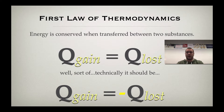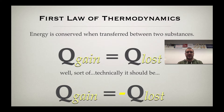So first, and this is one of the big laws of thermodynamics here, the first law, which is going to state that the thermal energy must be conserved as it goes from one material to another. So if you look at the equation that's up here, we have Q gained equals Q lost. So that means the thermal energy gained by one material has to be equivalent to the thermal energy lost by another.